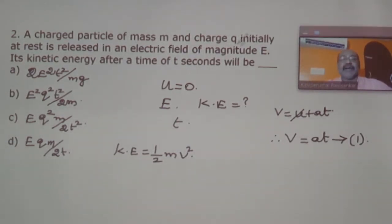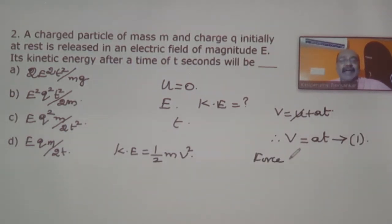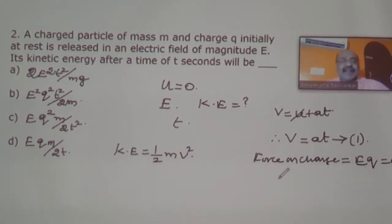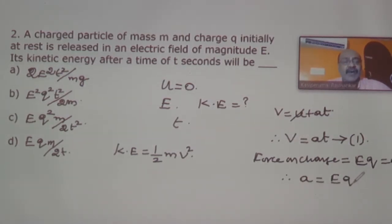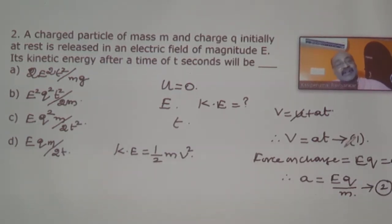How do we get the acceleration? A charge q is released in an electrical field. The force on the charge is equal to E into q. In general, force equals mass into acceleration. So the acceleration is eq divided by m. Take this as equation number two, and substitute it into equation one.